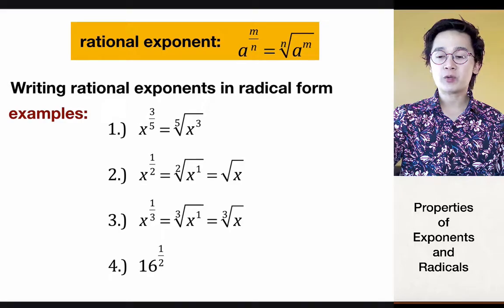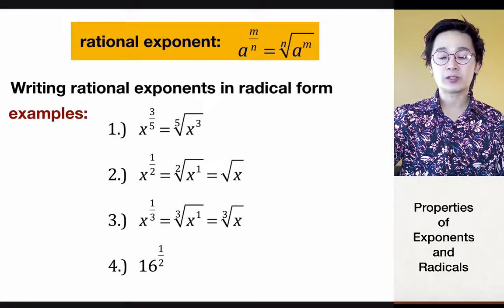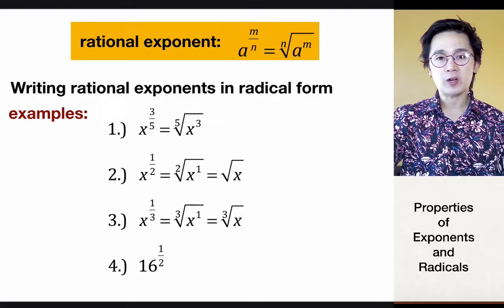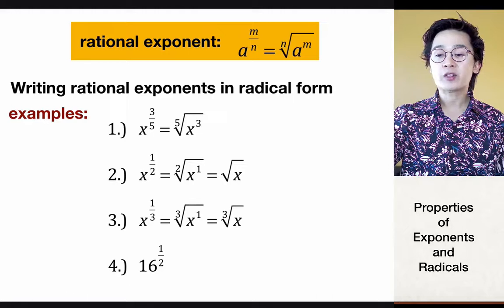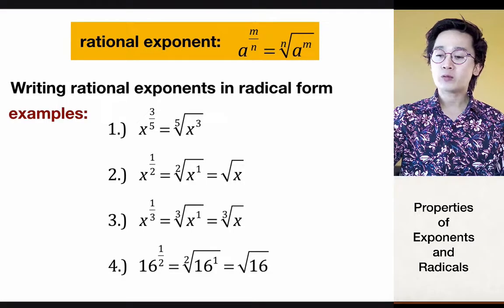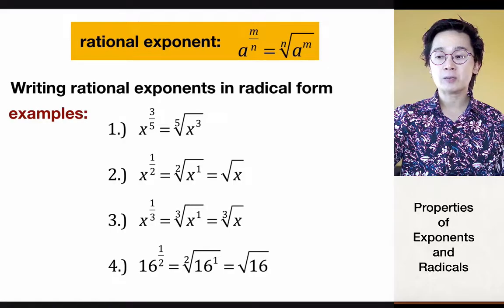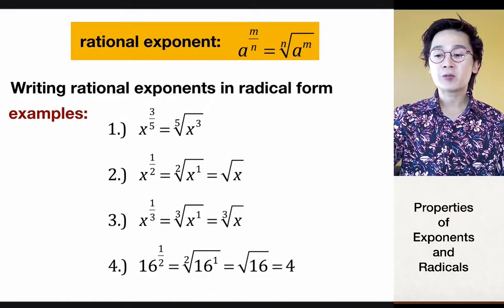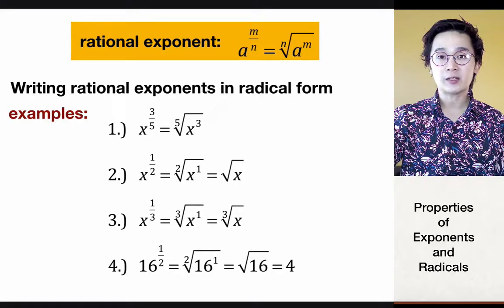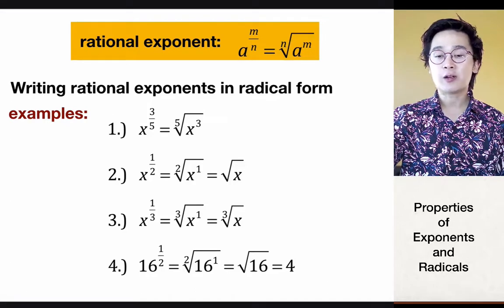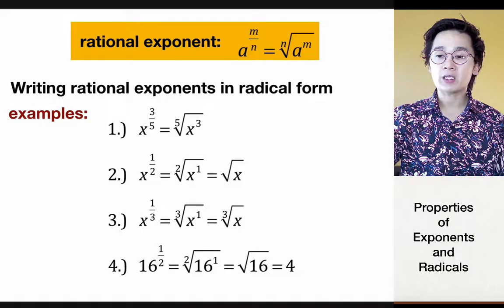Problem number 4 is different because we're using a real number instead of a variable. If we raise 16 to 1 over 2, it's a little complex to understand, but converting it to radical form gives us simply the square root of 16 — which is more familiar. Some rational expressions are easier to solve when you convert them into another form, just like what we did here with 16 raised to 1 half.